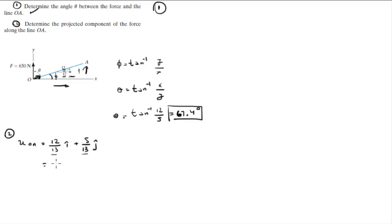So when you solve this, this is equal to 0.923i plus 0.385j uOA. And this is a unit vector which means that this unit vector has a magnitude of 1.